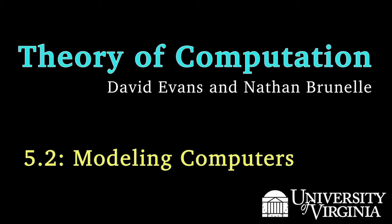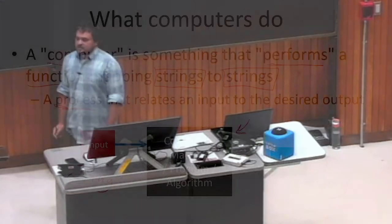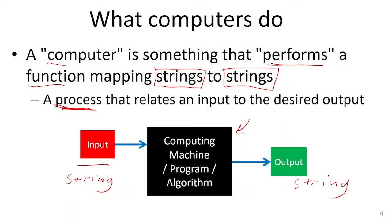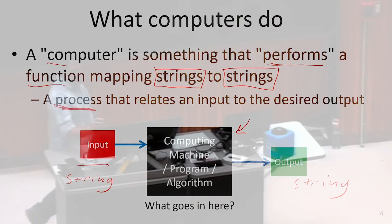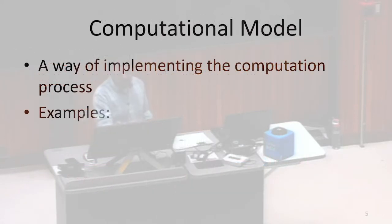There are several different ways that this black box could manifest. Right now we've just said it's some process. That process could look like a variety of different things. Different ways that we could manifest that process, we call those different computational models. So the computational model is how that process is actualized, how it's implemented. A computational model is a way of implementing that process.